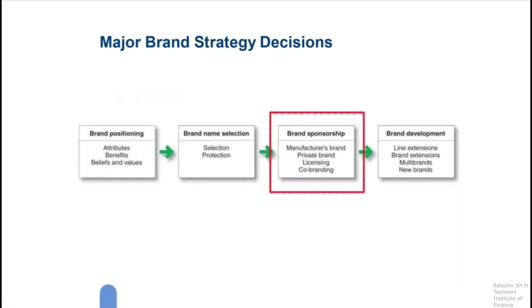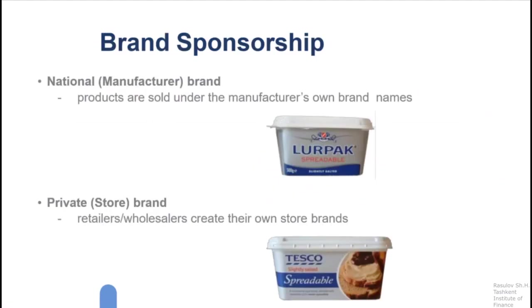Brand strategy step 3: brand sponsorship. We have four brand sponsorship types: manufacturer's brand, private brand, licensing, and co-branding. First, national or manufacturer brand — products are sold under the manufacturer's own brand name, which is the norm in most markets. Second, private or store brand — retailers or sellers create their own store brands in order to promote their brand and sell the product of a supplier, for example.